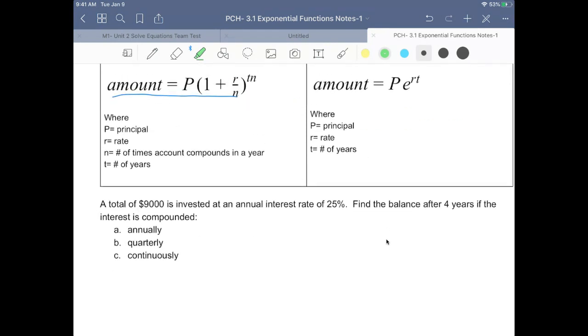We have a total of $9000 invested at an annual rate of, this should be 2.5% because 25% is insane. Find the balance after, we're going to do it after 5 years. If the interest is compounded annually, quarterly, and continuously.